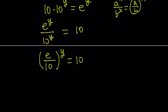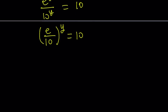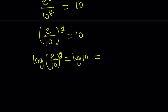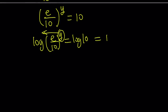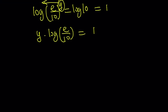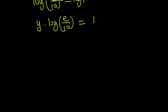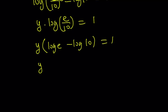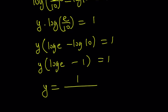Now it's nice because we have a single variable and we can bring it down. You can log both sides since we have a 10 on the right hand side. Log of e over 10 to the power y equals log 10, which is 1. And now you can go ahead and bring the y down: y times log of e over 10 equals 1. Using the property of expanding the log of a quotient, we can write this as log e minus log 10. But remember log 10 is 1, so we can write it as y times log e minus 1 equals 1.